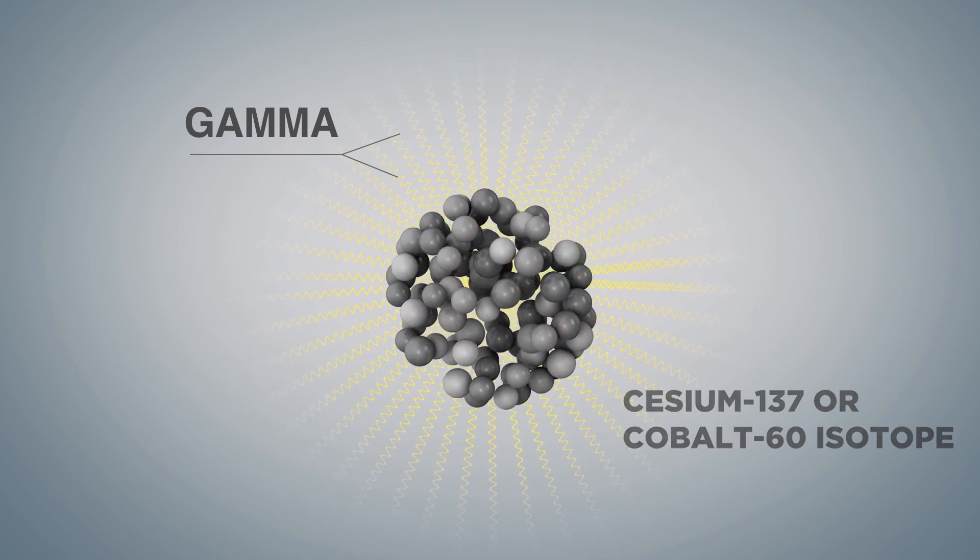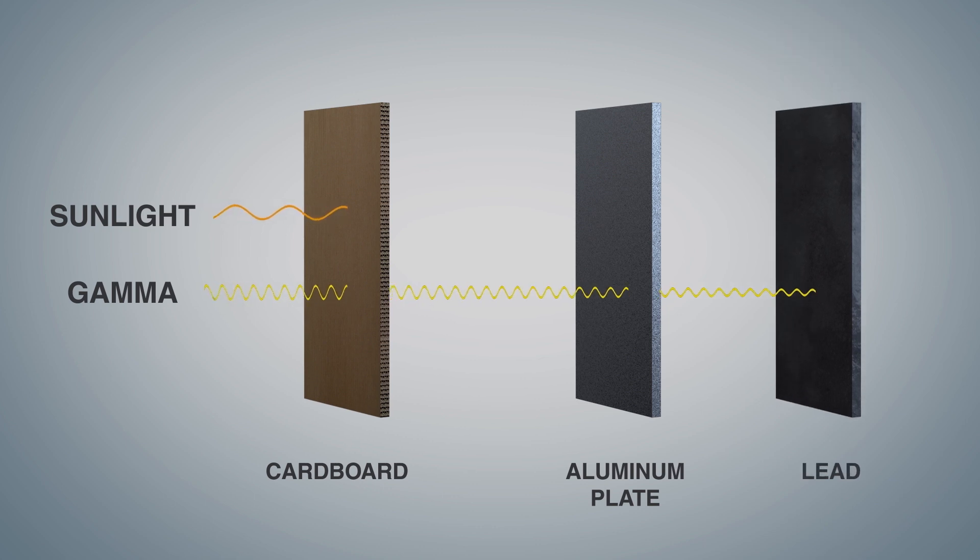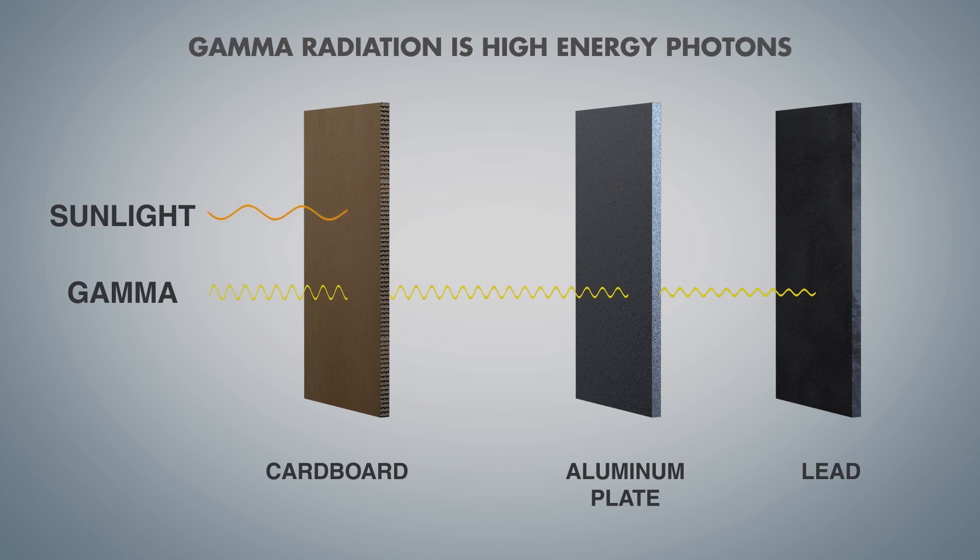We use gamma radiation in our measurement systems because it penetrates aluminum, steel, and other industrial materials that alpha and beta cannot penetrate. Gamma radiation is high-energy photons, the same form of energy as sunlight, only much stronger.